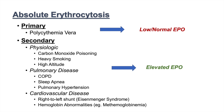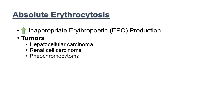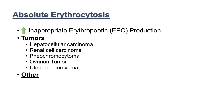To distinguish primary from secondary absolute erythrocytosis: secondary causes are associated with elevated EPO. Beyond hypoxemia-driven causes, there is also inappropriate EPO production. Tumors such as hepatocellular carcinoma, renal cell carcinoma, pheochromocytoma, ovarian tumors, and uterine leiomyomas can all produce EPO without regulation, leading to erythrocytosis.